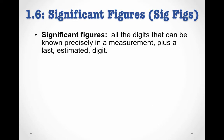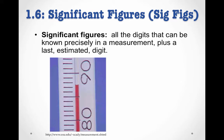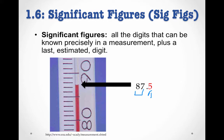So what is a significant figure? Significant figures are all the digits that can be precisely known in a measurement, plus a last estimated digit. If you recall from the previous video on measurement, if we're measuring the temperature of an object using this thermometer here, we know that our temperature reading is going to begin with an 8 — then 80, 1, 2, 3, 4, 5, 6, 7. Those are known digits. We know those digits precisely. But we can also estimate a last digit, which I'm going to call 0.5. Our precisely known digits are 87, and our estimated digit is 5. All three digits are significant figures.